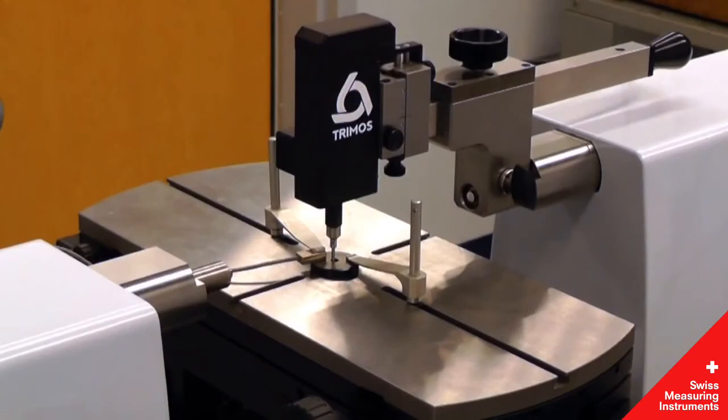Inside diameters too small for the L-shaped attachments can be accessed using a ruby ball probe attached to the internal measuring device.